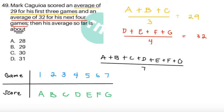item 49, Mark Kaguya scored an average of 29 for his first three games and an average of 32 for his next four games. Then his average so far is about or approximately equal to one of these four values. Note that there's a total of seven games because the first three and the next four, that gives a total of seven.